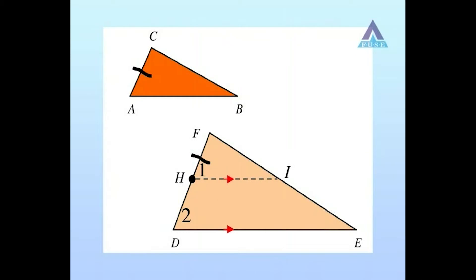First, we conclude from the congruence of ABC and HIF that the corresponding angles C and F are equal. And so are angles A and H — angle 1.